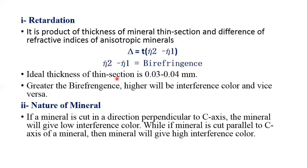The ideal thickness of a mineral section is 0.03 to 0.04 mm, and generally sections are prepared within this range. The major factor which affects retardation is birefringence, and birefringence varies from mineral to mineral. If birefringence is greater, interference color will be higher. If birefringence is smaller, interference color will also be low.